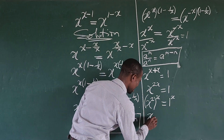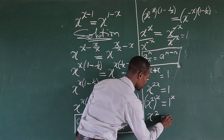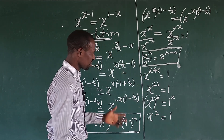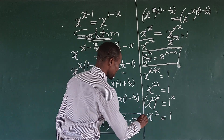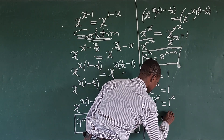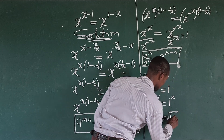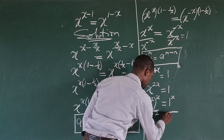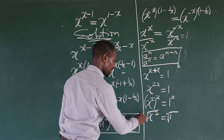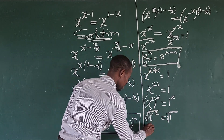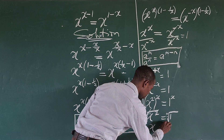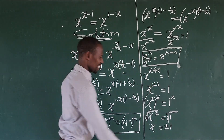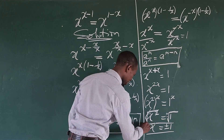This gives us x to the power of 2 equals 1. We are solving for x, so we take the square root of both sides. This produces plus or minus 1, so we have x equals plus or minus 1 — giving us our two roots x₁ and x₂.